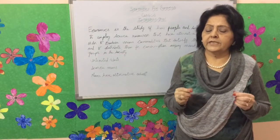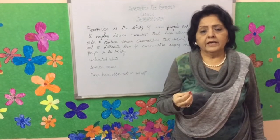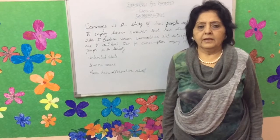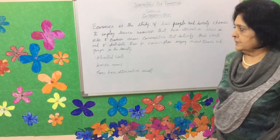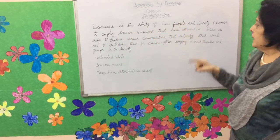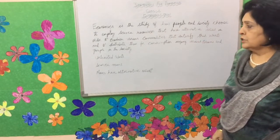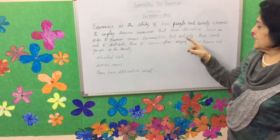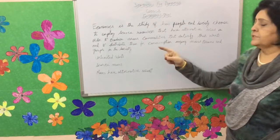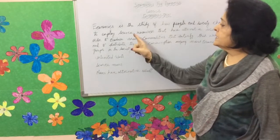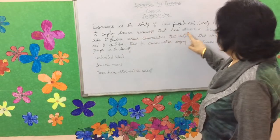Adam Smith's definition dwells only on wealth. It ignores the social and welfare aspect of society, and so it has been criticized by many. The most accepted definition of economics is: economics is the study of how people and society choose to employ scarce resources that have alternative uses, in order to produce various commodities that satisfy their wants and to distribute them for consumption. We need to understand terms like scarce resources and alternative uses.